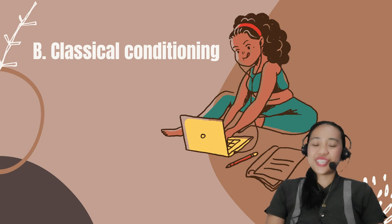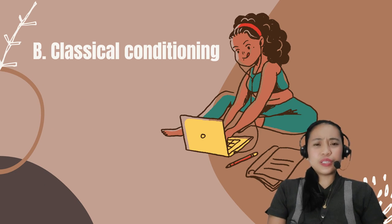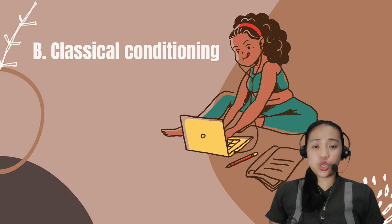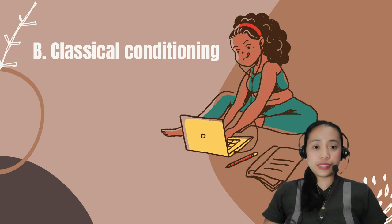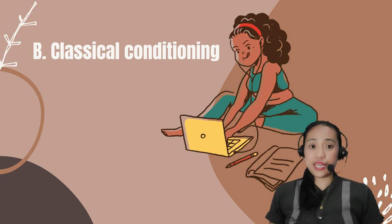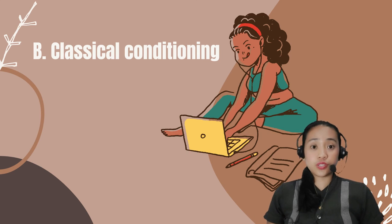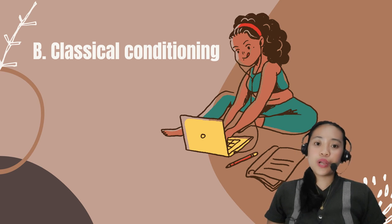The correct answer is Letter B. Classical Conditioning explains why the fear of something — e.g., a phobic reaction to dogs — is caused by a painful experience in the past. For example, a person is afraid of dogs because he was chased by a big dog when he was small.